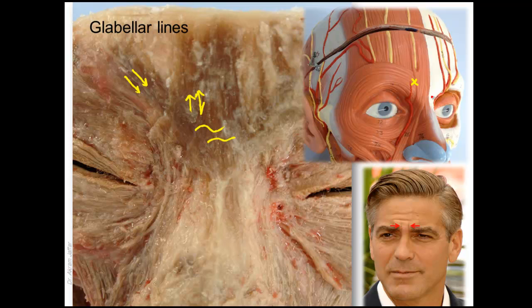For the procerus muscle, another injection is given close to the midline. Some textbooks mention a muscle called depressor supercilii, but its nature is disputed. Many anatomists consider it part of orbicularis oculi, with fibers originating on the medial orbital rim near the lacrimal bone, inserting into the medial aspect of the bony orbit inferior to corrugator supercilii. The main muscles constituting glabellar lines are corrugator supercilii and procerus.